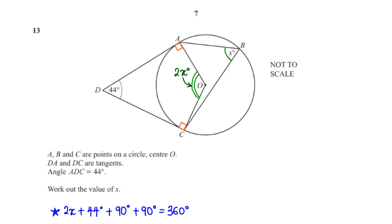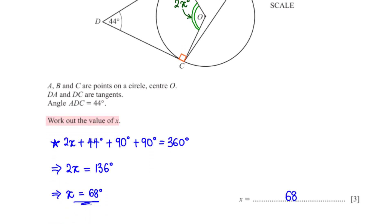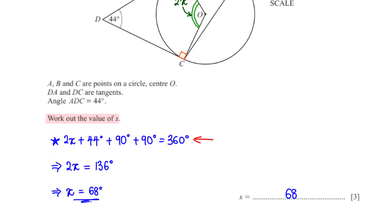D, A, and DC are tangents to a circle centre O. Angle ADC is 44 degrees. Work out the value of x. Arc AC subtends angle x on the circumference and 2x at the centre. The angles between each tangent and radius are 90 degrees. The angles in quadrilateral AOCD sum to 360 degrees: 2x plus 44 plus 90 plus 90 equals 360, giving 2x equals 136, so x equals 68.